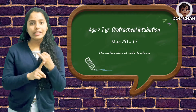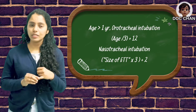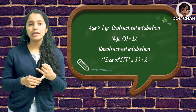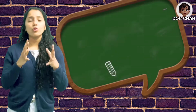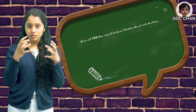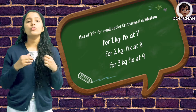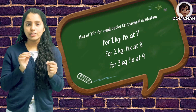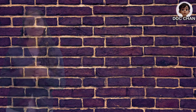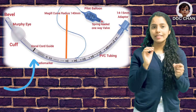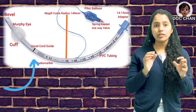Now we need to know the depth of insertion of the endotracheal tube. For orotracheal intubation in patients above 1 year of age, the formula is age/3 + 12 cm. For nasotracheal intubation, the formula is the size of the tube used multiplied by 3, plus 2 cm. For very small patients in orotracheal intubation — 1 kg, 2 kg, 3 kg — the rule we follow is 7, 8, and 9, meaning we fix the tube at 7 cm, 8 cm, and 9 cm respectively. There is a transverse line on the endotracheal tube, and as soon as you see that transverse line passing through the level of the vocal cord, you know you are at the proper level.